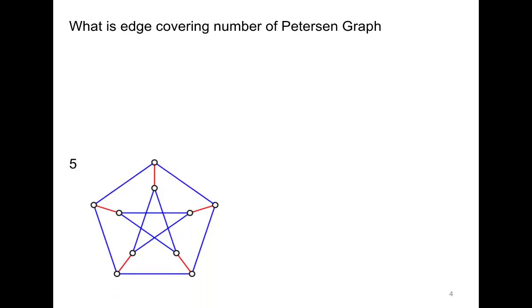What is the edge covering number β'(G) for the Petersen graph? Please try by yourself. You will observe that it comes out to be 5. You can also observe that it is equivalent to the matching number in this case, and this matching is perfect.